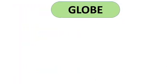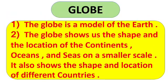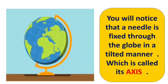In the previous videos, we have discussed about the globe in detail. So let's recall it in short. First, a globe is a model of the earth. The globe shows us the shape and the locations of the continents, oceans, and seas in a smaller scale. It also shows the shape and location of different countries. This picture shows you what the earth actually looks like. You will notice that a needle is fixed through a globe in a tilted manner, which is called its axis. You can see only half of a globe at one time.